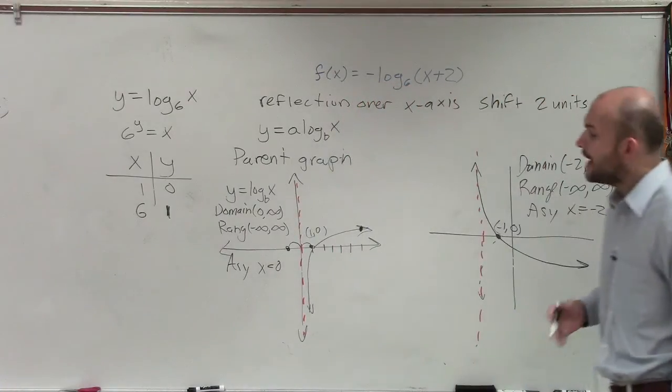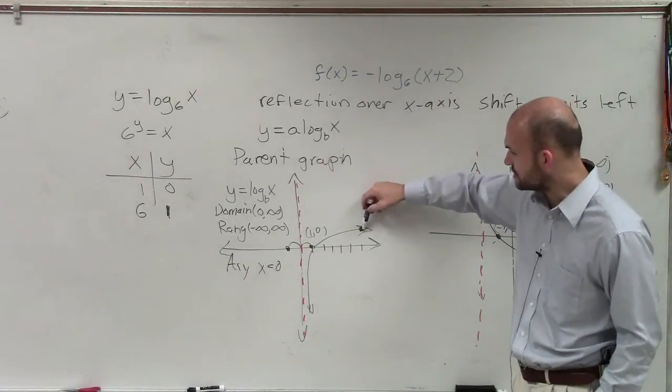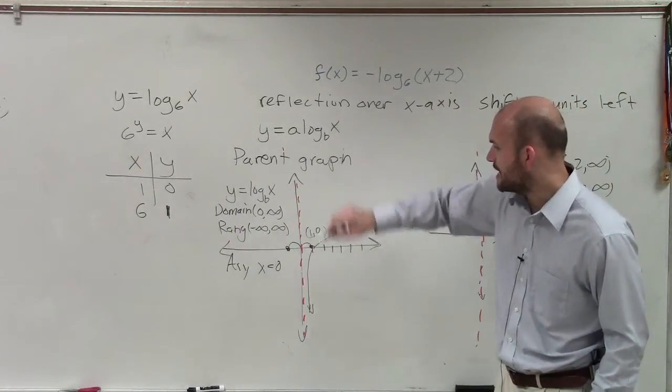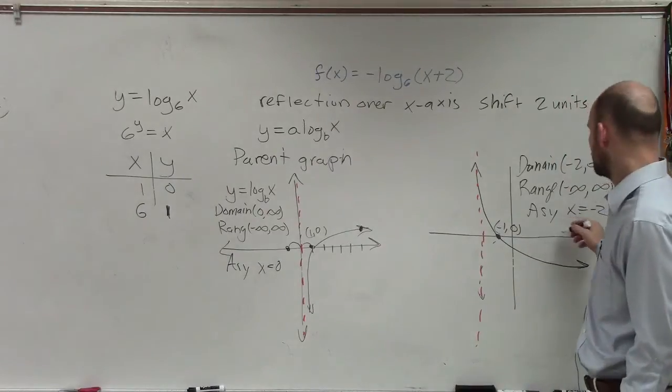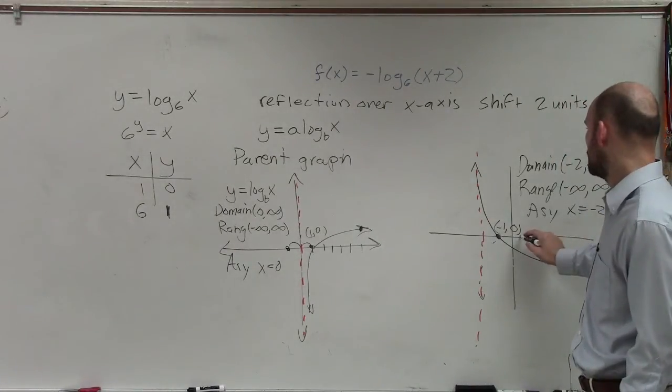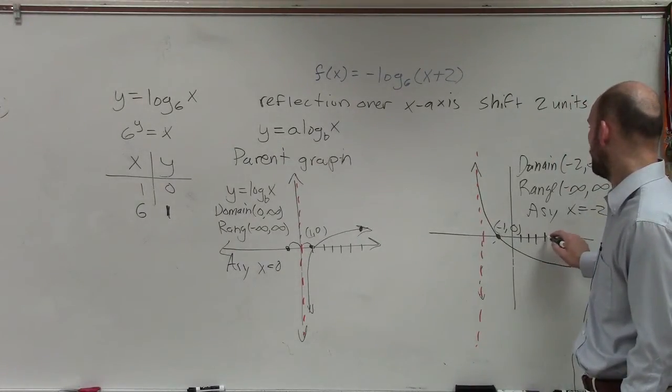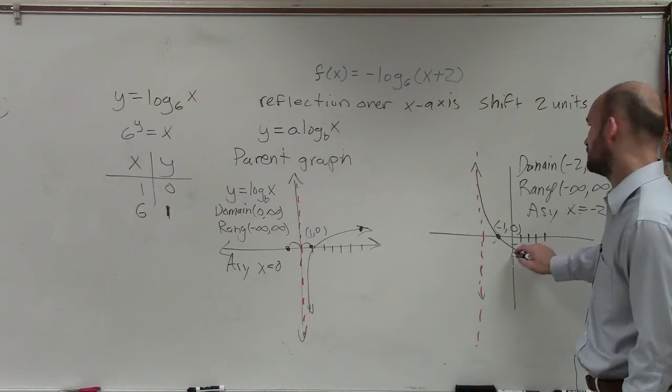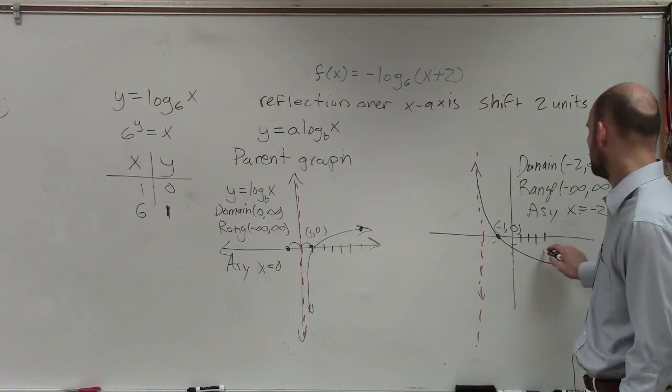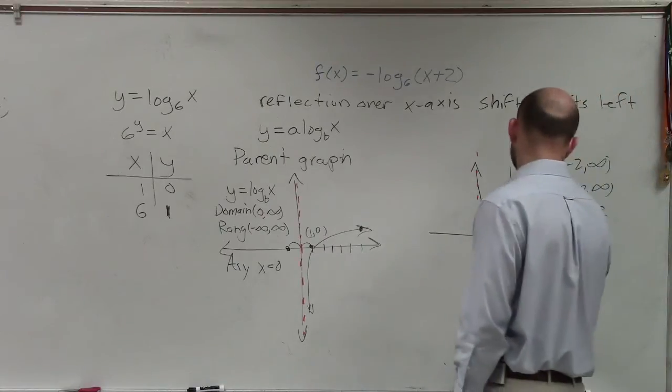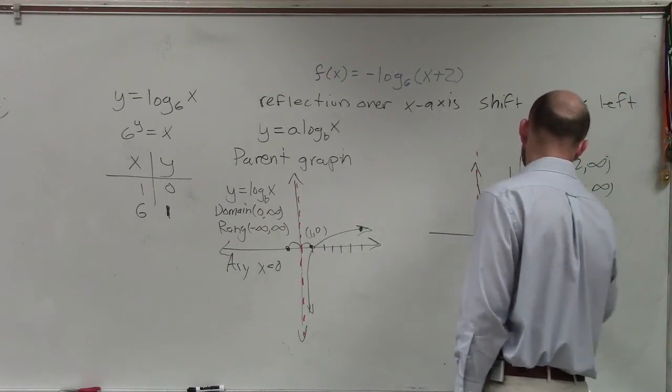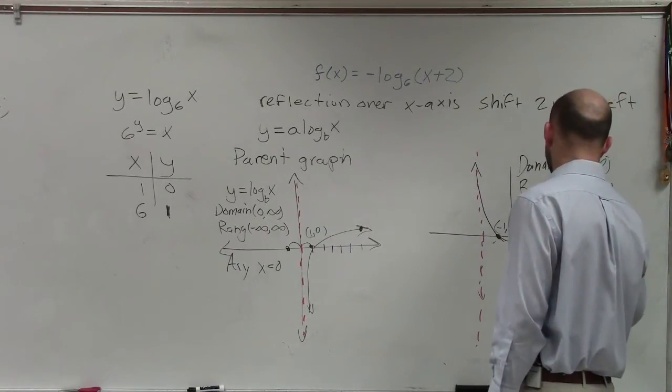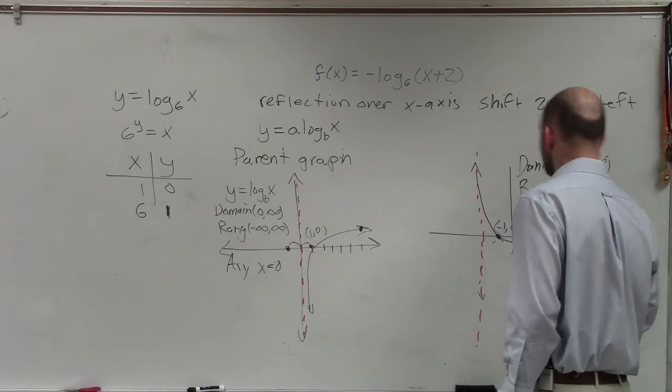Now, if I was going to go and graph this, I'm still going to shift this over 2 and then reflect over. So now it's going to be at 1, 2, 3, 4, down 1. So really, the graph goes something like that. So much, 4, negative 1.